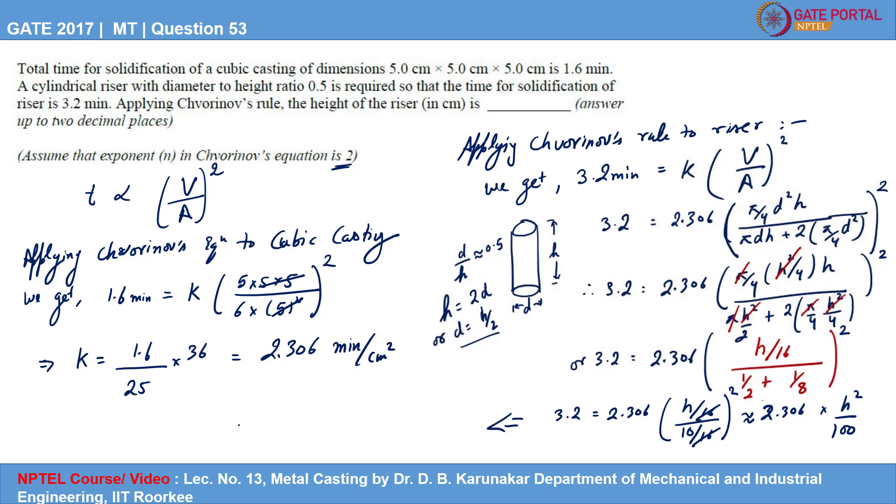So H square comes out to be 3.2 into 100 upon 2.306. You can take the square on the other side and it will become under root. And the value of height of the riser comes out to be about 11.7 centimeters.